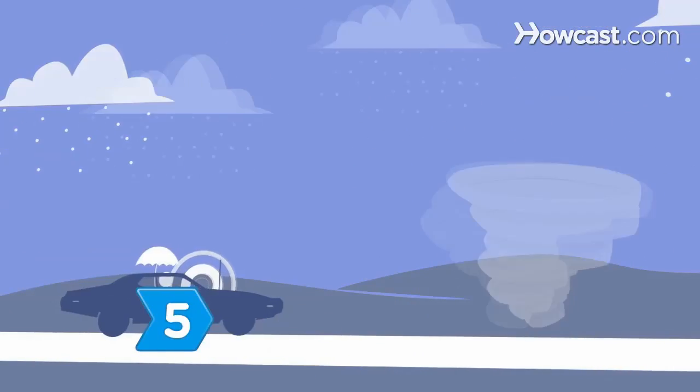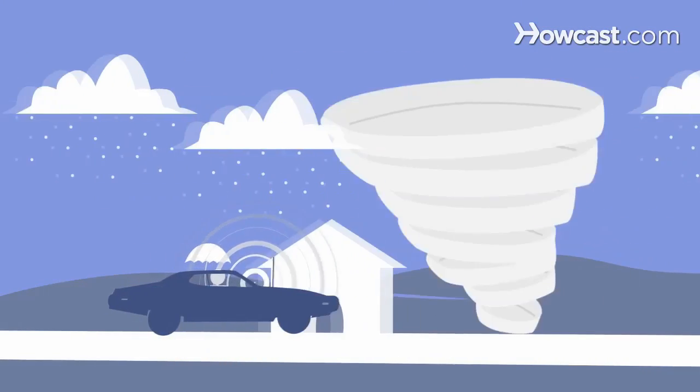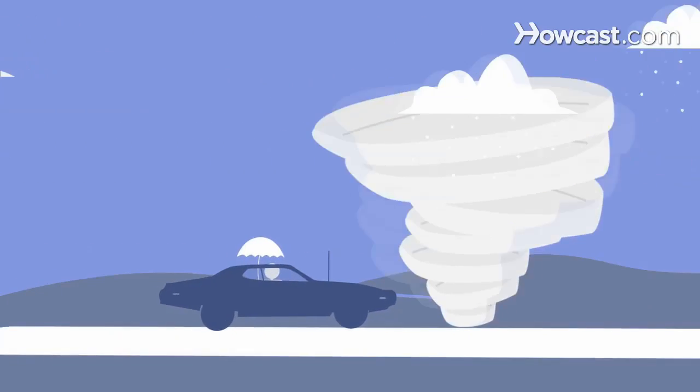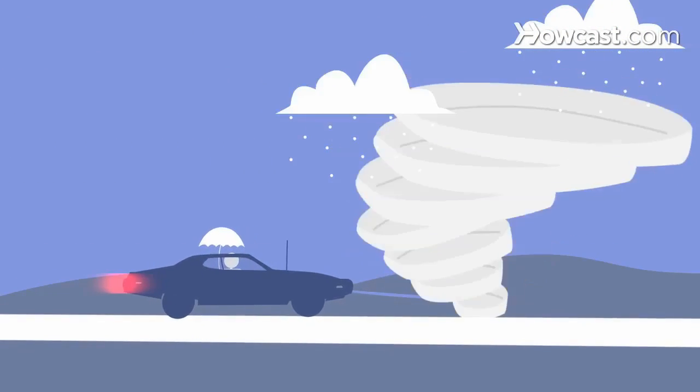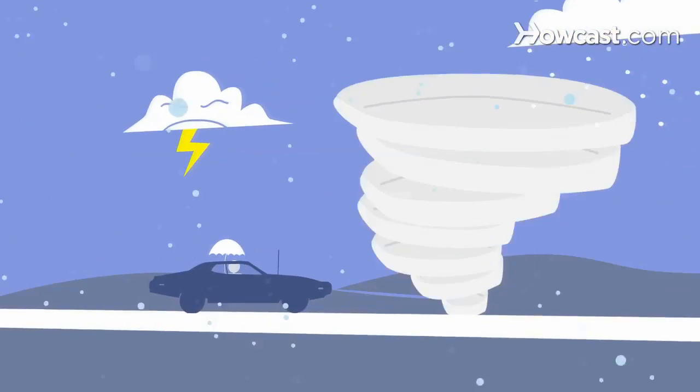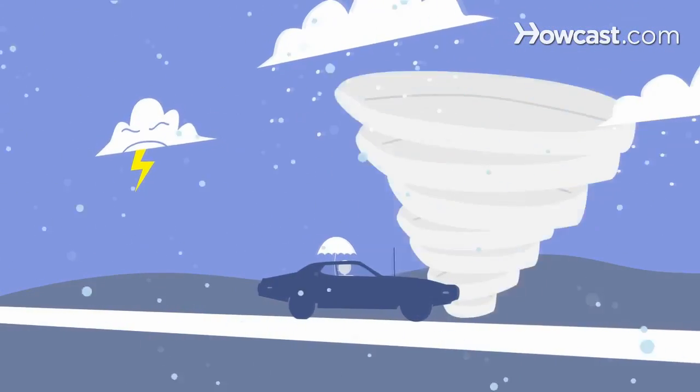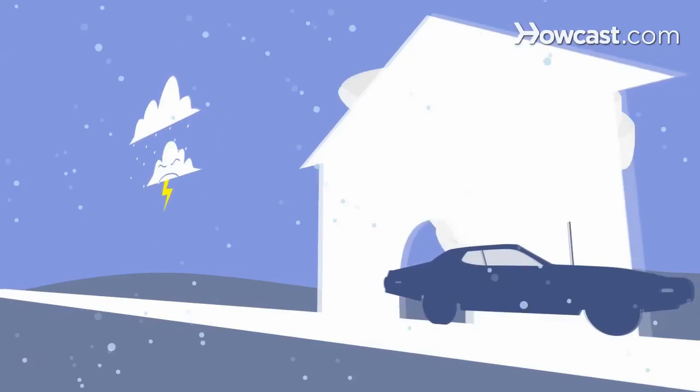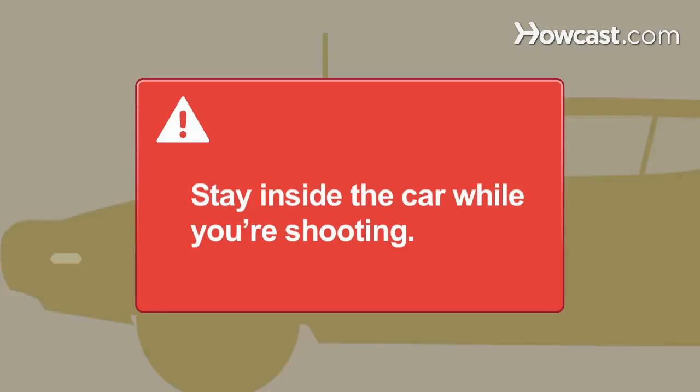Step 5. Found a storm to chase? Ride alongside it. If you can do so safely, pull off the road, put on your hazards, and document the weather with a camera. Head away from the storm when lightning starts striking every 15 seconds or hail begins falling in a sheet. Stay inside the car while you're shooting to protect yourself from being struck by lightning.